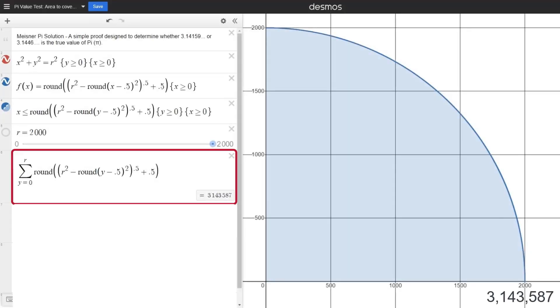This quarter circle can be completely covered by painting 3,143,587 squares.